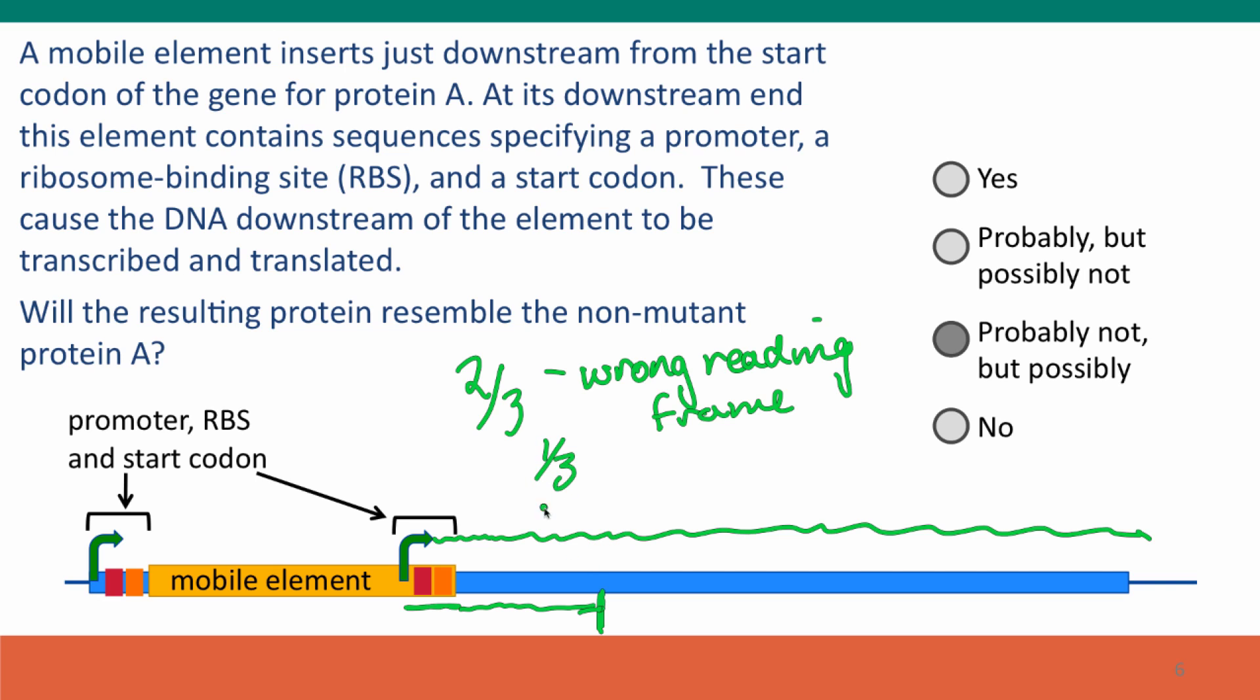A third of the time, though, it'll have the right reading frame and will produce what could be a pretty much functional copy of gene A, of protein A, because only a little bit's been removed from the end.